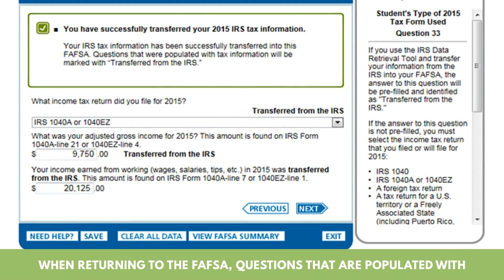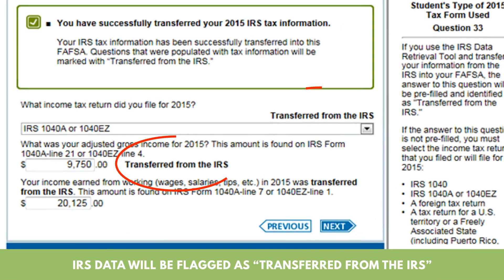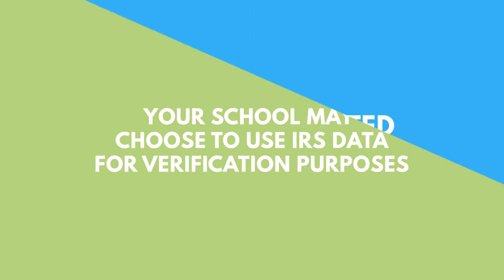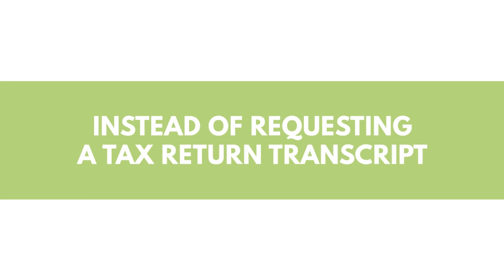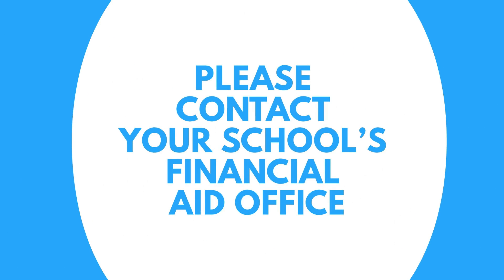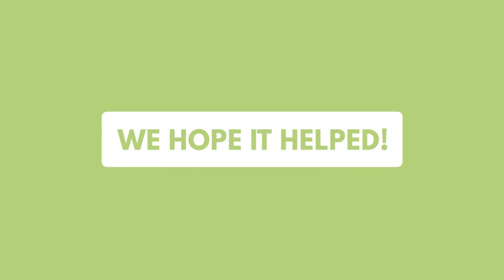9. When returning to the FAFSA, questions that are populated with IRS data will be flagged as 'transferred from the IRS.' 10. If you are selected for verification, your school may choose to use IRS data for verification purposes instead of requesting a tax return transcript. If you have any further questions, please contact your school's financial aid office. Thank you for watching this tutorial. We hope it helped.